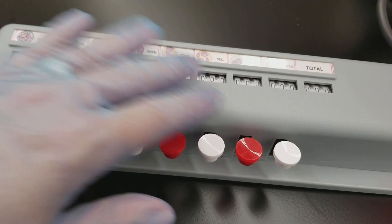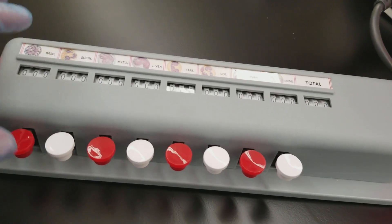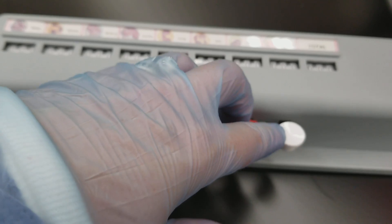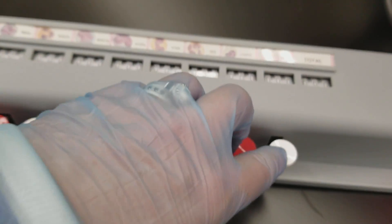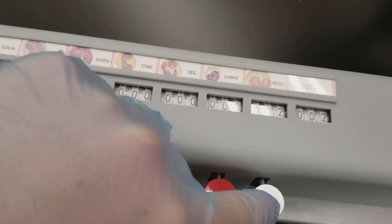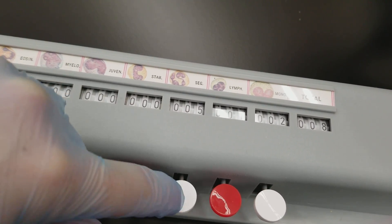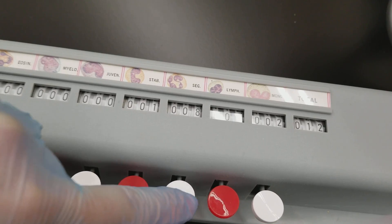So you can move these around if you wanted to. But when you're going through and you're scanning, you're going to be hitting whatever cell line it is that you're seeing. Obviously, you should be seeing more neutrophils than anything else.